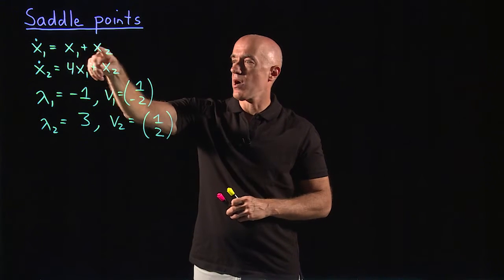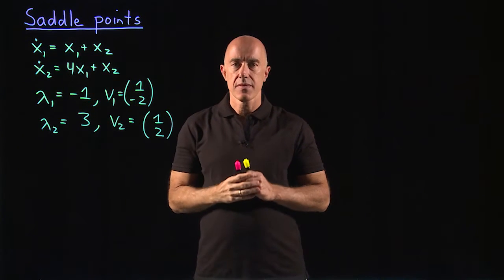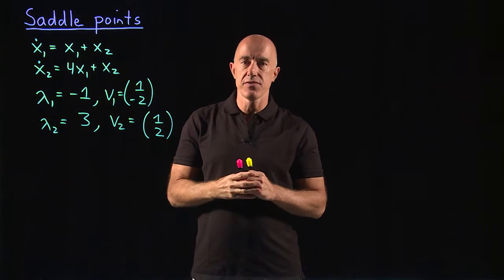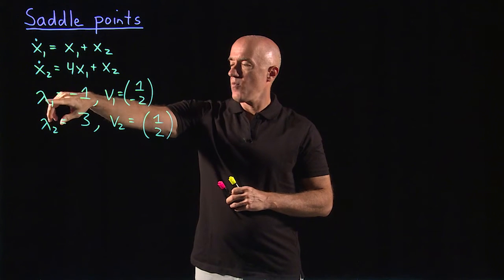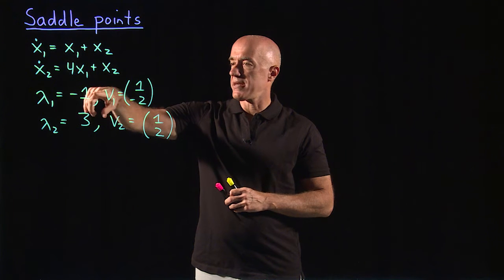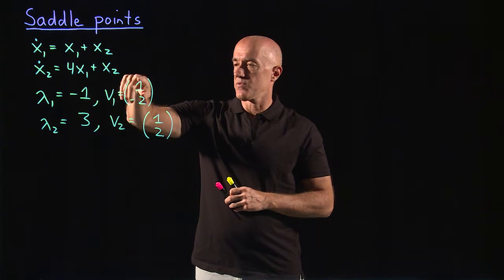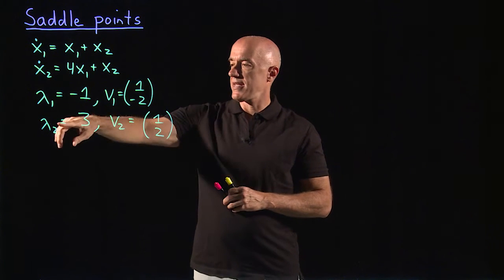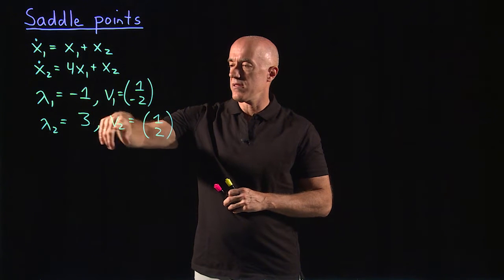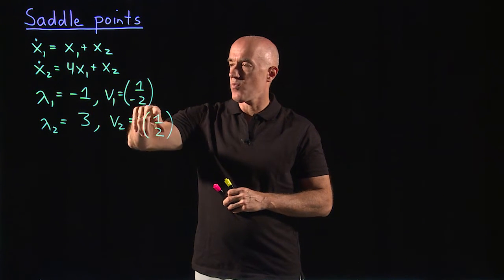The matrix is 1, 1, 4, 1. If we find the eigenvalues and the eigenvectors, the first eigenvalue is minus 1. The first eigenvector is 1 minus 2. The second eigenvalue is 3. The second eigenvector is 1, 2.